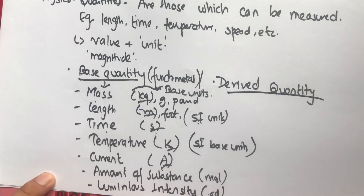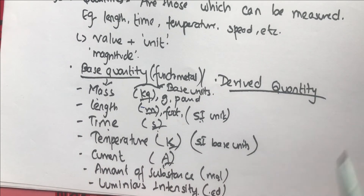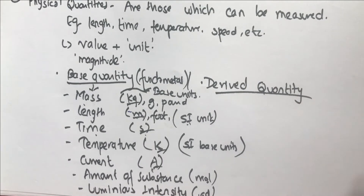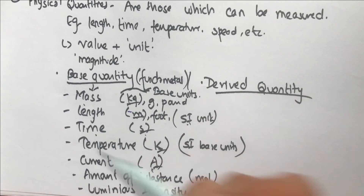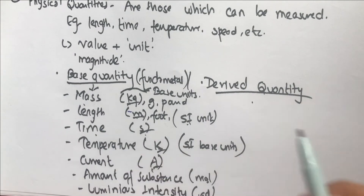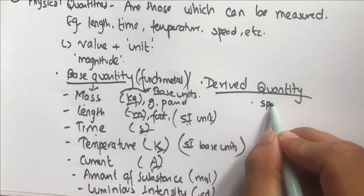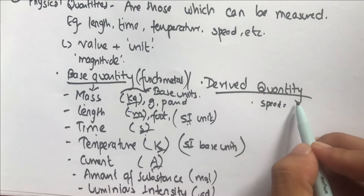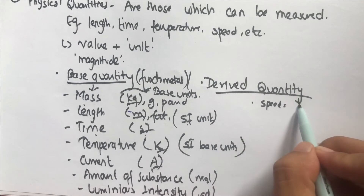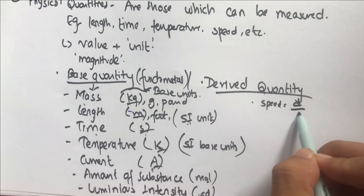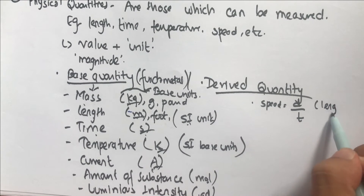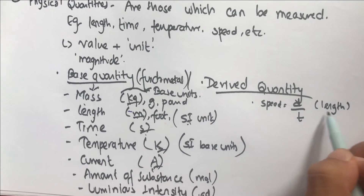Derived quantities are those which are derived from base quantities. For example, speed is basically distance travelled over time taken. Distance travelled is length, so speed is length over time.